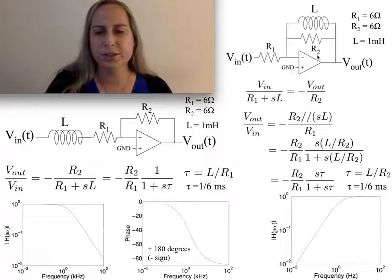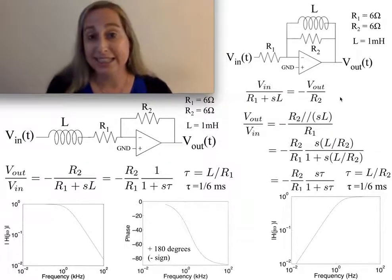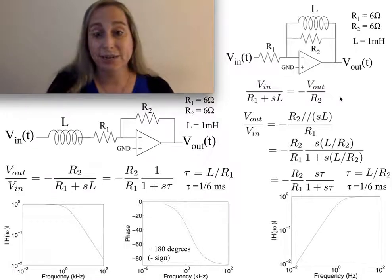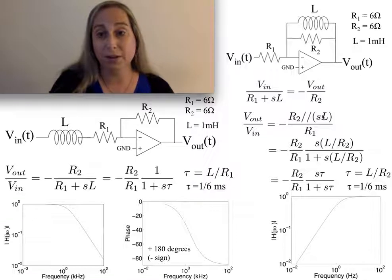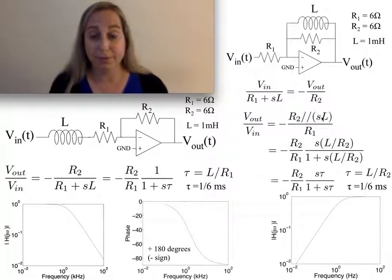A similar thing happens with this circuit. Instead of going through KCL like before, I can see that I've got different elements. The input part is R1 in the denominator with a minus sign, and then I've got R2 parallel with SL. I just put that together.